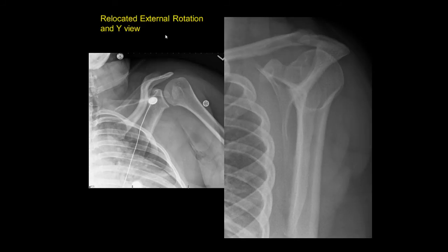Here's a relocated view in external rotation, and you'll notice that now the patient has been able to resume external rotation. But again you see this sclerotic area and this line, which is the trough line — abnormal and a sign of that anteromedial fracture from the glenoid.